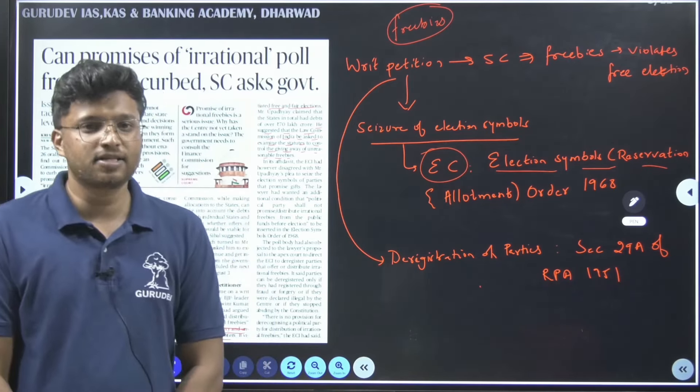A few important facts about Indian Ramsar sites: the first Ramsar site in India was Chilika Lake, Odisha. The largest is the Sundarbans. The smallest wetland is the Renuka Wetland in Himachal Pradesh. The state with the highest number of wetlands is Uttar Pradesh. Please note down these facts and mark all 54 Ramsar site locations on a map.